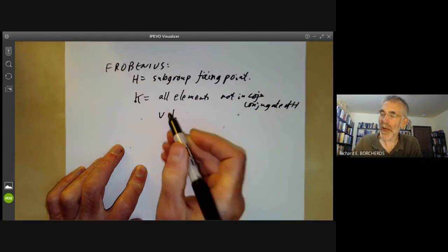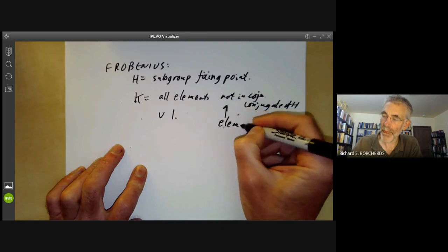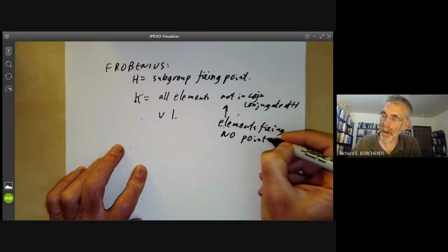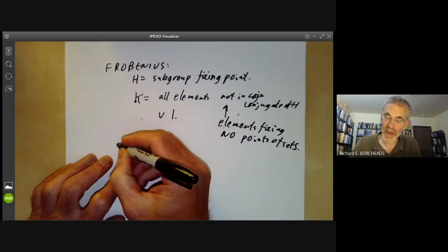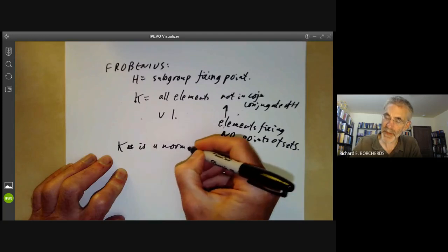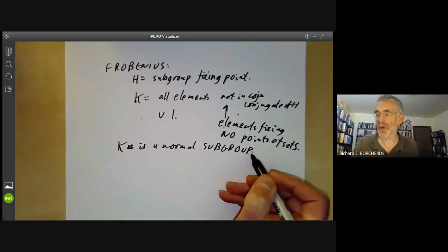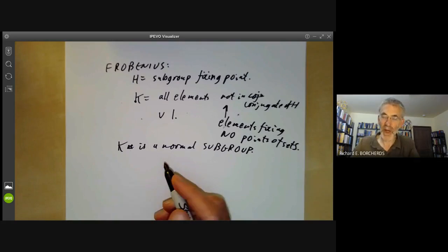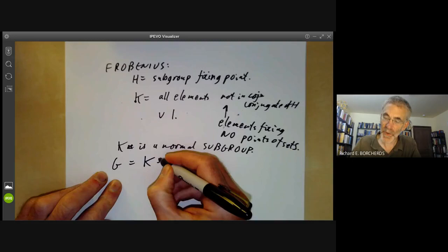Together with the element 1. So all elements not in a conjugate of H. This just means the elements fixing no points of the set S. And Frobenius proved this really rather remarkable theorem that K is a normal subgroup. So the tricky part is to prove that K is a subgroup, which isn't all that obvious. Once you know it's a subgroup, it's trivial to prove that it's normal. And furthermore, G is a semi-direct product of K with H.